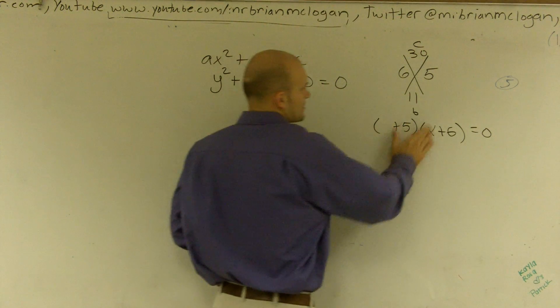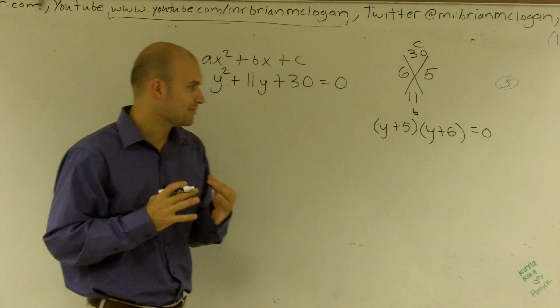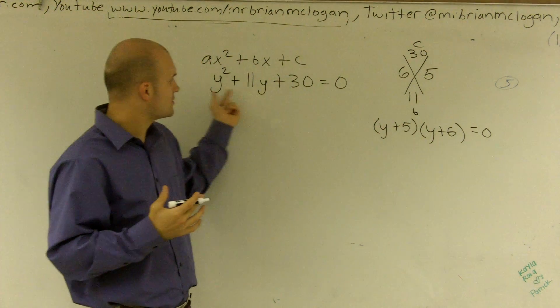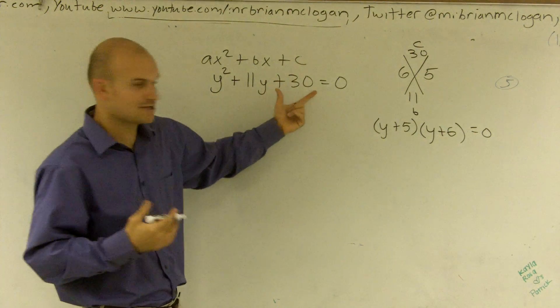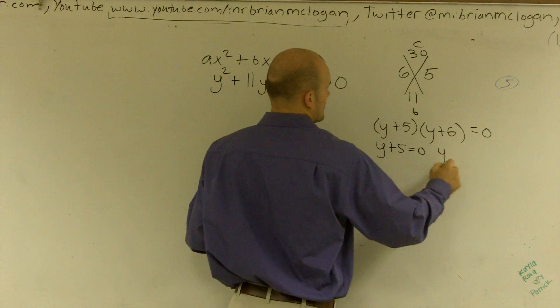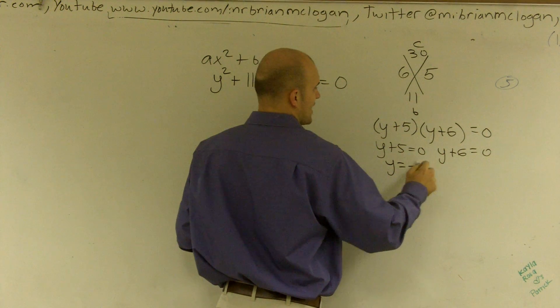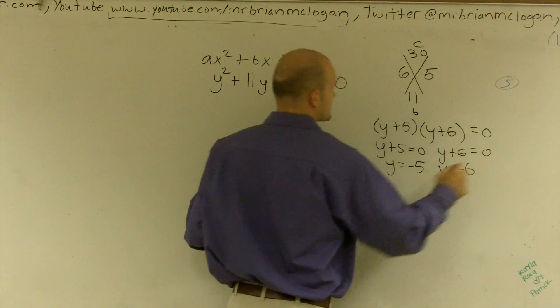We're not dealing with x's. We're dealing with y's. So y plus 5 times y plus 6, when using FOIL, would give you this answer. Then I set both of these equal to 0 and you get y equals negative 5 and y equals negative 6.